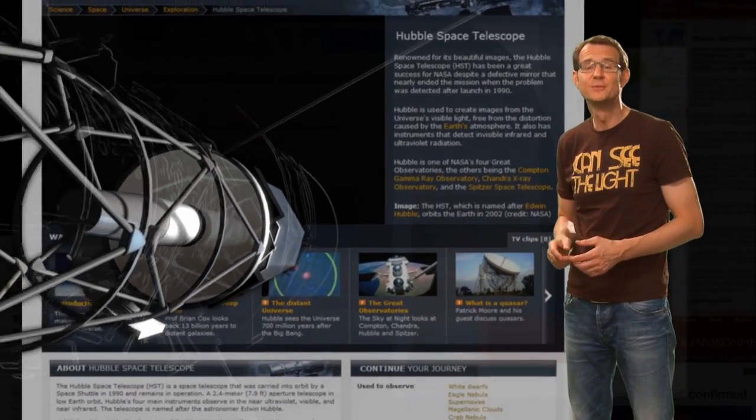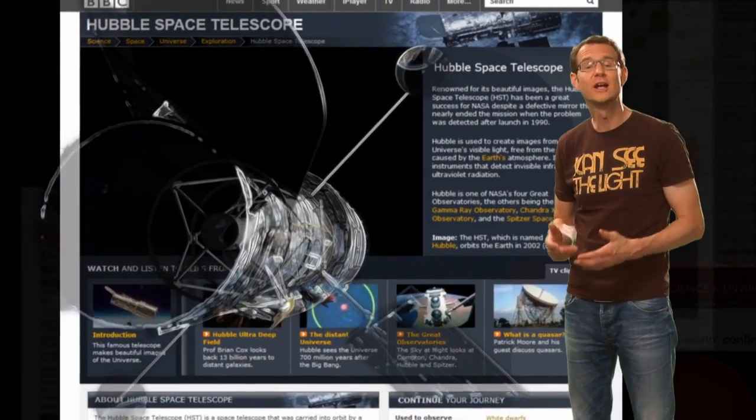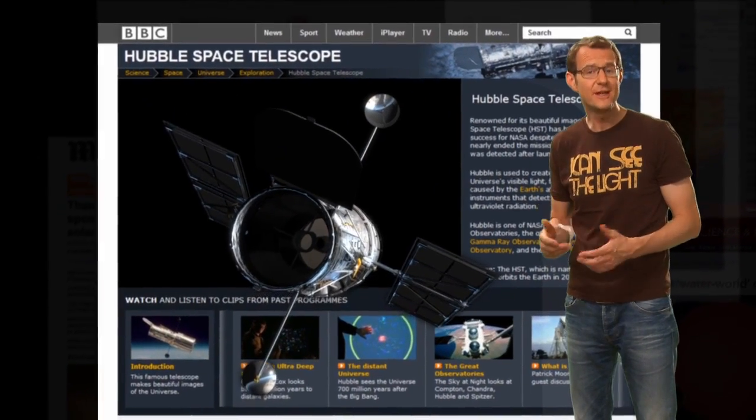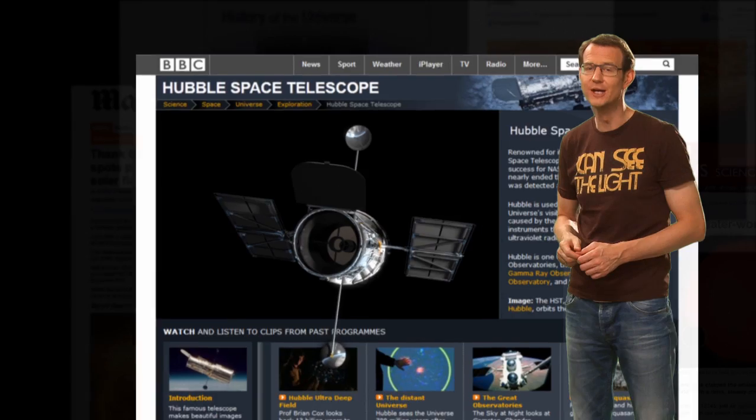Hubble has a couple of instruments on board that do this kind of science. They function a lot like high-tech versions of a prism, except they work even on the faintest of galaxies and can take extremely precise measurements of brightness.